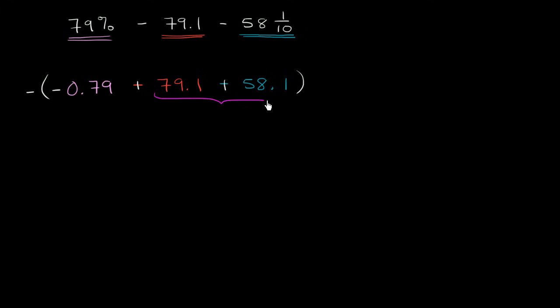So let's first do that. Let's add 79.1 plus 58.1. So 79.1 plus 58.1. So a tenth plus a tenth is 2 tenths. 9 plus 8 is 17. So that's seven ones and one ten. So one ten plus seven tens is going to get us to eight tens, plus five tens gets us to 13 tens, or 130. So we have 137.2 is this part right over here.